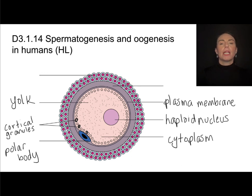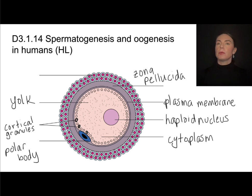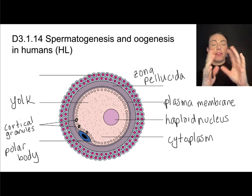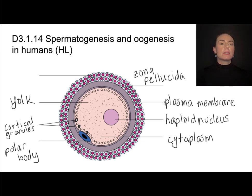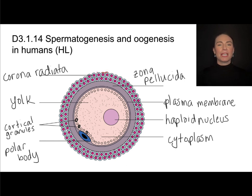On the outside of the plasma membrane is a space called the zona pellucida — we'll talk more about its function later. On the outside of that are layers of cells that are remnants of the primary follicle that developed around the ovum in the ovarian cycle. You may see these referred to as follicular cells, or also as the corona radiata — corona, almost like a crown.